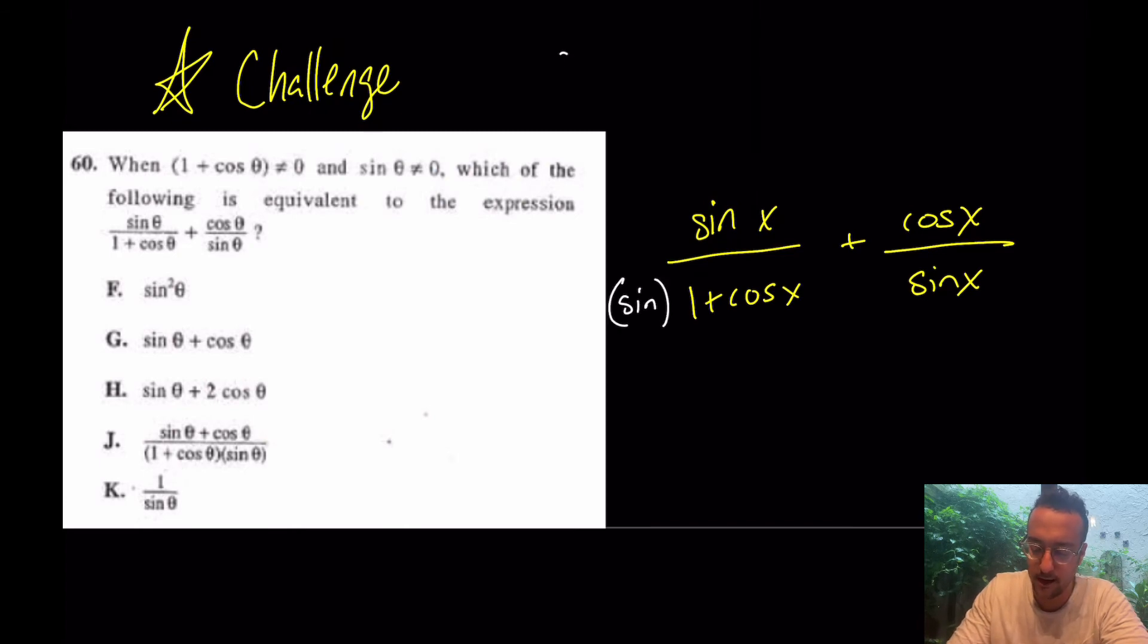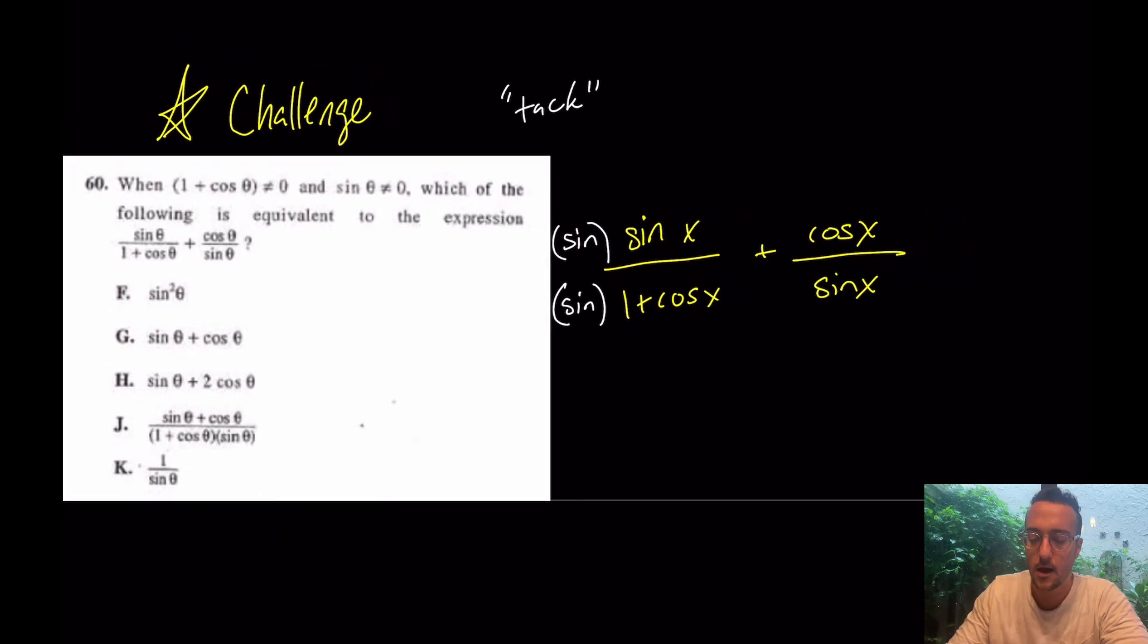Thus, what should I tack on here? Again, I love that word tack. What should I tack on to the left side? Of course, a sine, top and bottom. But what should I tack on to the right side? Well, what is this one missing? Well, this is missing a 1 plus cosine x. 1 plus cosine x.